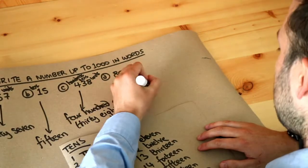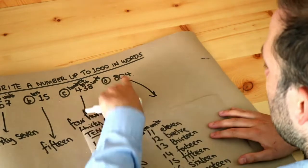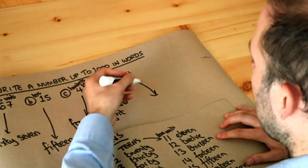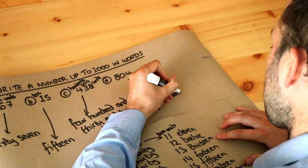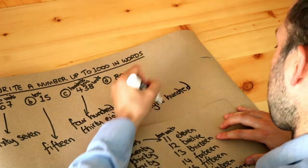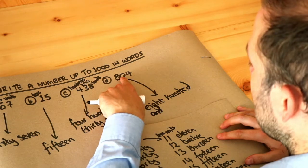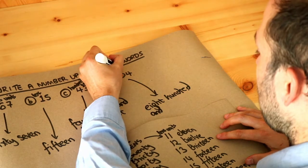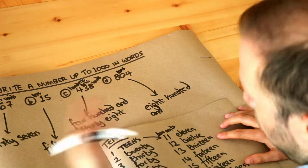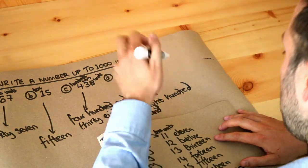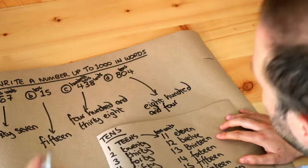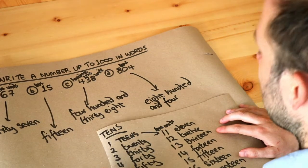Now the final one. The hundreds digit is eight, so we just say it as eight hundred and. Now the tens digit is just zero, isn't it. So we don't say the tens at all because there are no tens. So we just skip straight to the units digit of four and we just write that as four. So we would just say this number as eight hundred and four.